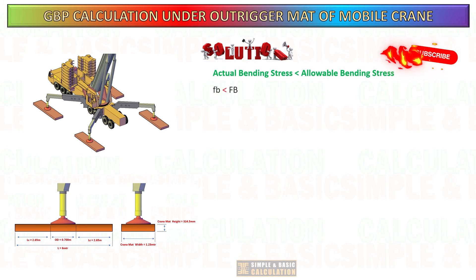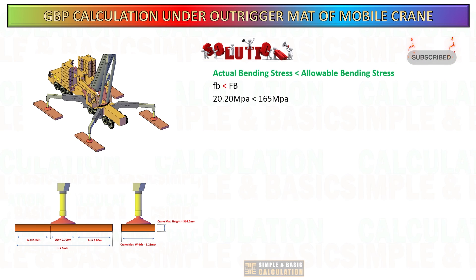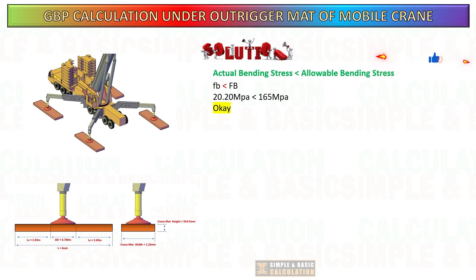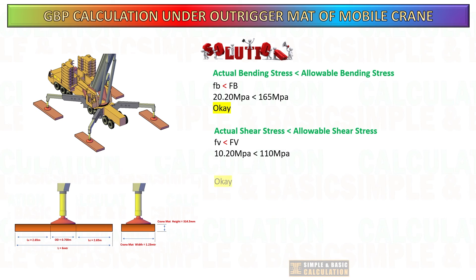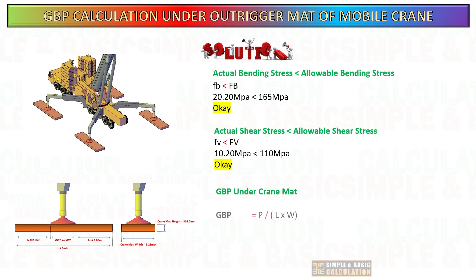Based on the computation, we can compare the actual bending stress and actual shear stress with the permissible bending and shear stress on the mat. The results show that the actual stress is below the permissible stress threshold. Therefore, the crane mat is capable of evenly distributing the force on the ground exerted by the outrigger of the crane.